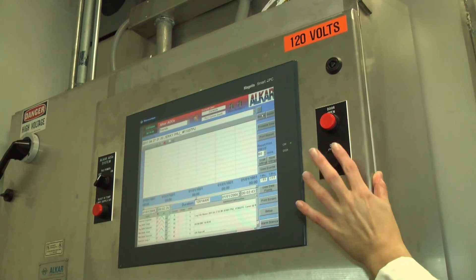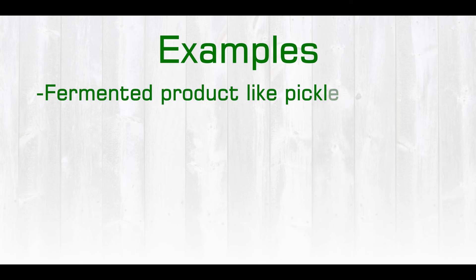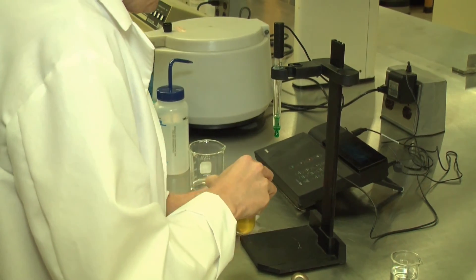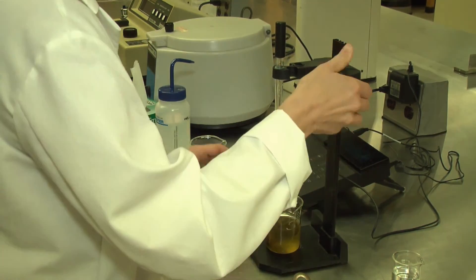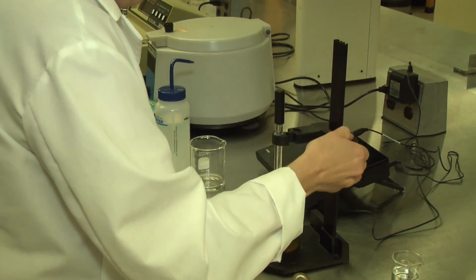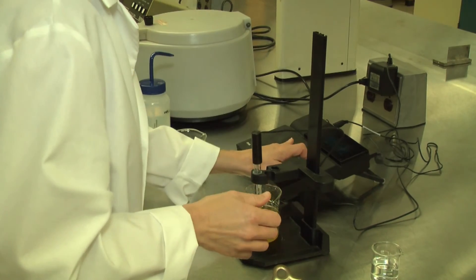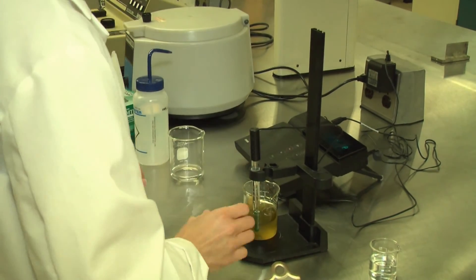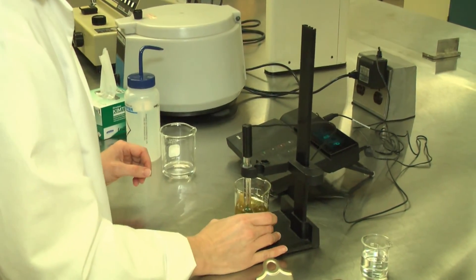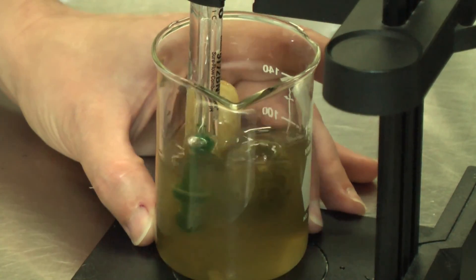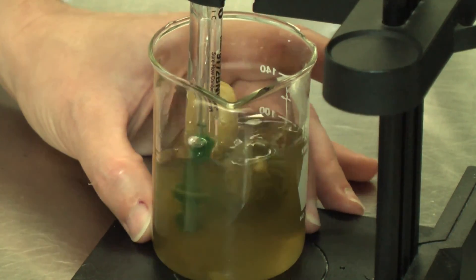Another example would be a fermented product such as pickles. In order to ensure that the appropriate pH of a fermented product such as pickles is attained, we would consider the critical limits to be the final pH of the fermented product in order to control for microbiological contamination by acidifying or fermenting that product.